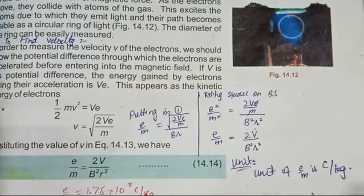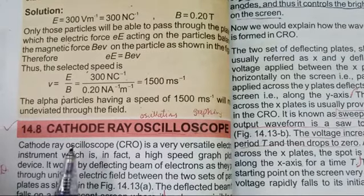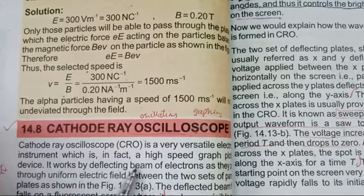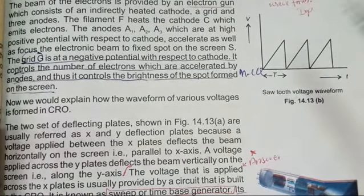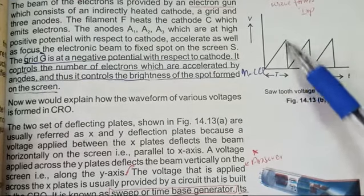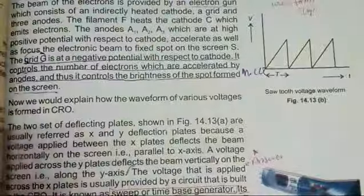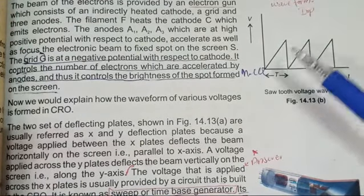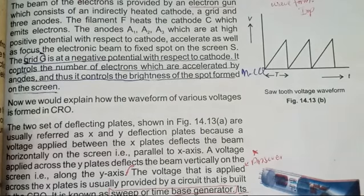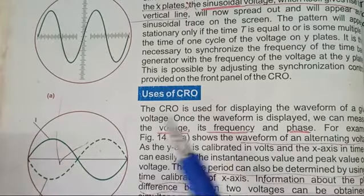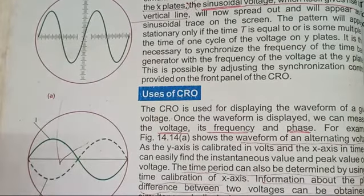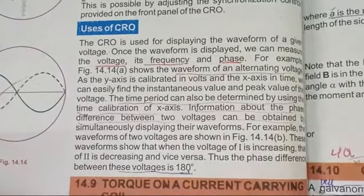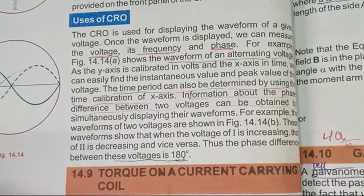Another short question: draw the diagram of the CRO and define CRO — cathode ray oscilloscope. You must also know about sawtooth voltage, in which the potential increases linearly and then suddenly drops — that is sawtooth voltage. Draw sinusoidal voltage as well. The uses of CRO are a very very important short question; write these points in the form of a list.